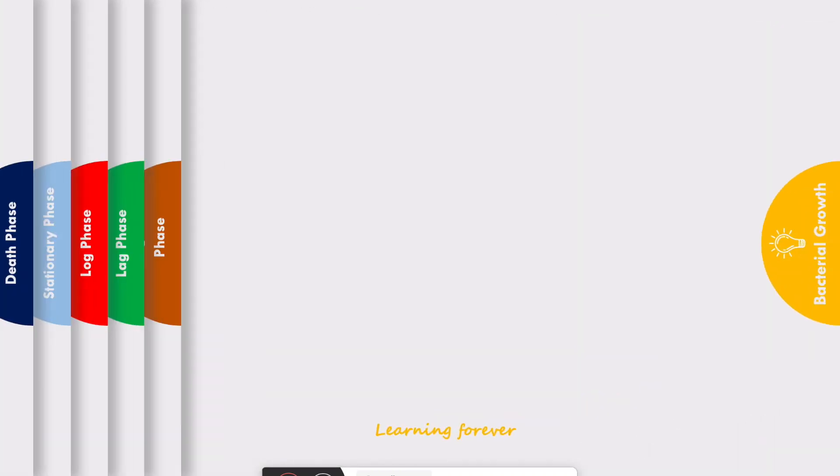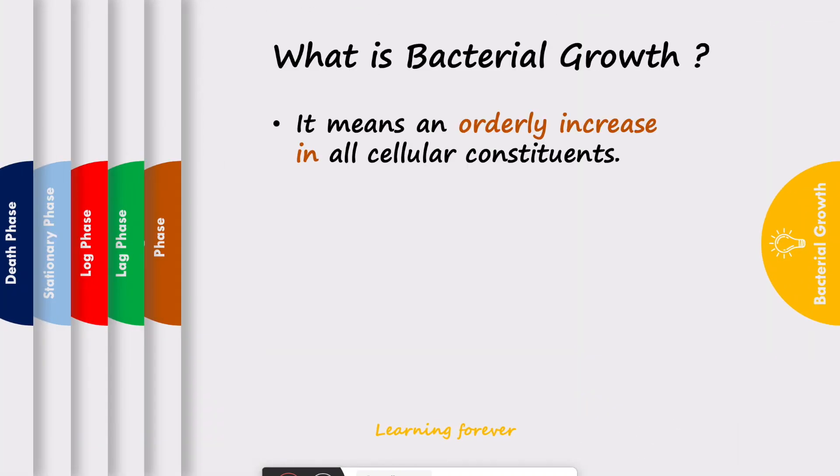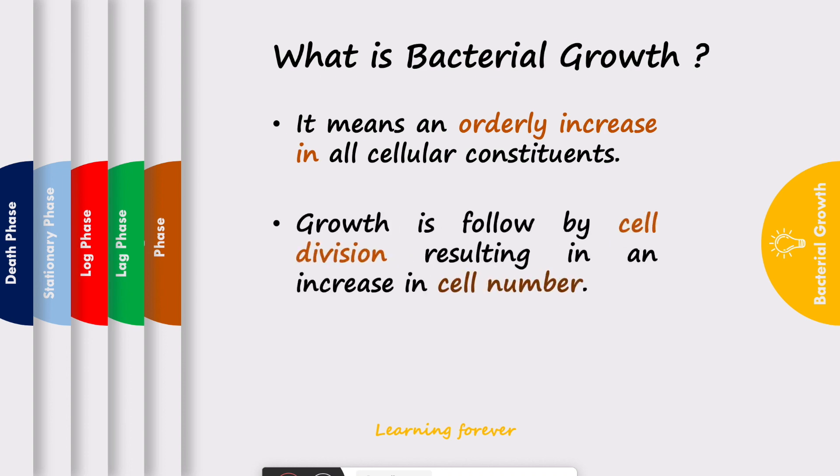Let's see what is bacterial growth. It means an orderly increase in all cellular constituents. Growth is followed by cell division resulting in an increase in cell number. Increase of mass may not really reflect growth of the bacteria. So, two things. Number one, orderly increase in all cellular constituents. Number two, increase in cell number reflects growth of the bacteria.